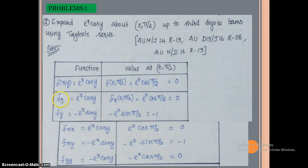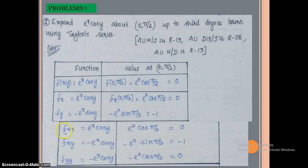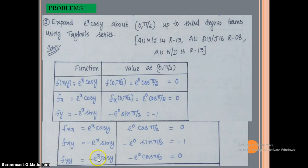For second-order derivatives: f_xx = e^x·cos y, so f_xx(0,π/2) = e⁰·cos(π/2) = 0. f_xy = −e^x·sin y, so f_xy(0,π/2) = −e⁰·sin(π/2) = −1. f_yy = −e^x·cos y, so f_yy(0,π/2) = −e⁰·cos(π/2) = 0.